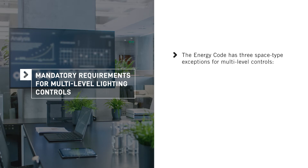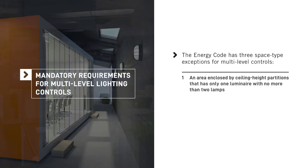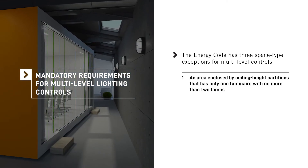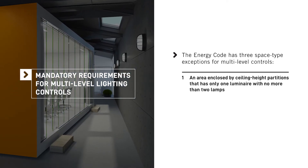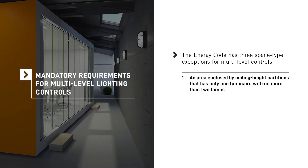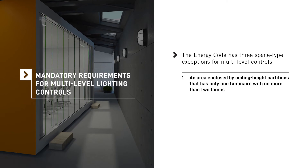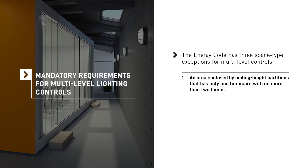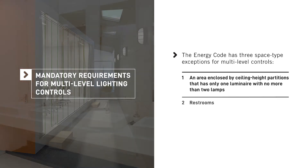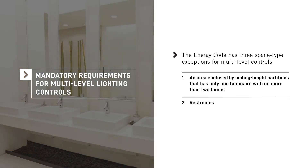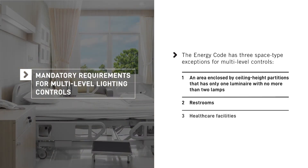It's important to note that the Energy Code has three space-type exceptions for multi-level controls: an area enclosed by ceiling height partitions that has only one luminaire with no more than two lamps, restrooms, and healthcare facilities.